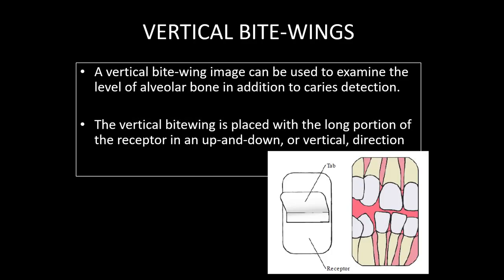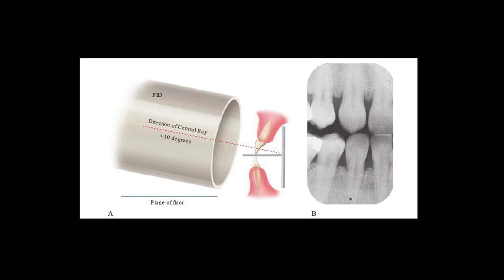A vertical bitwing image can be used to examine the level of the alveolar bone in addition to caries detection. The vertical bitwing is placed with the long portion of the receptor in an up-and-down or vertical direction; however, the central ray remains the same at plus 10 degrees vertical angulation.